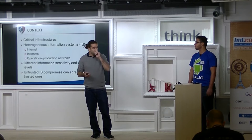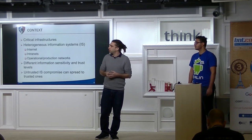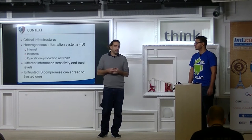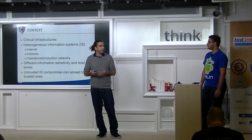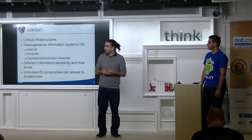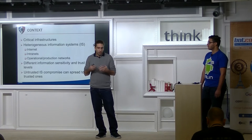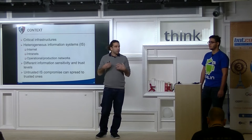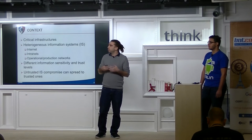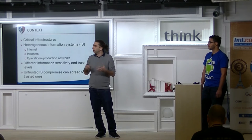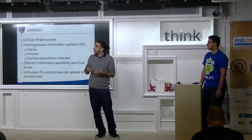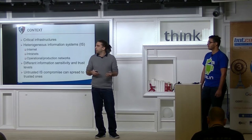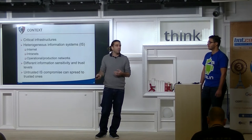So what is an air gap? In nowadays critical infrastructures, users are working with several information systems that have different levels of criticality and trust. One interesting question is: if an untrusted information system gets compromised, is it possible to mitigate the risk of malware dissemination or contamination of the trusted ones? And is it possible to mitigate data exfiltration from the trusted system to the untrusted ones?